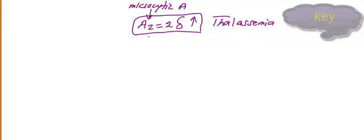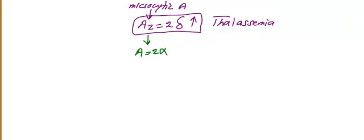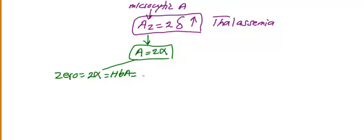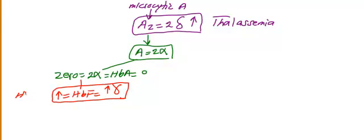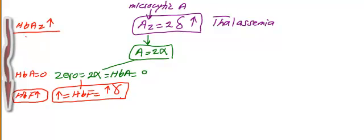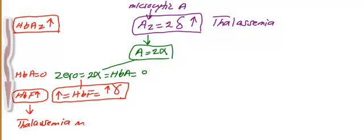The next step is to determine which type of thalassemia. Go to hemoglobin A, which is basically two alpha. If you see hemoglobin A equal zero — meaning two alpha equals zero — then go to hemoglobin F. An increase in hemoglobin F means increased gamma. So: A2 increase, HbF increase, and hemoglobin A equal zero — this leads to thalassemia major.